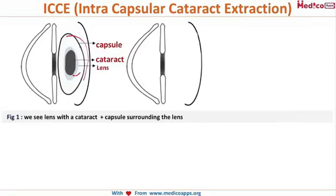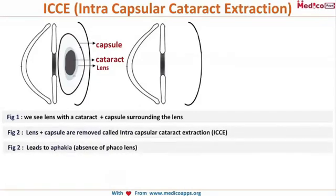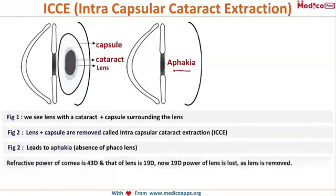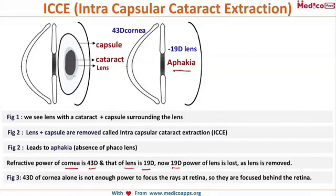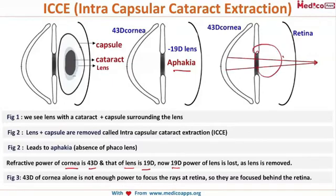In ICCE, the entire lens along with the capsule is removed, leading to aphakia — there is nothing present after ICCE. The refractive power of the eye is given by both the cornea and the lens: the cornea contributes 43 diopters and the lens gives 19 diopters. In ICCE, those 19 diopters are lost, and the cornea's 43 diopters is not enough to focus rays on the retina, so the rays fall behind the retina.